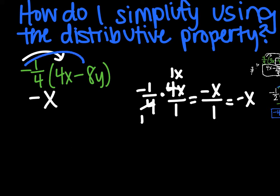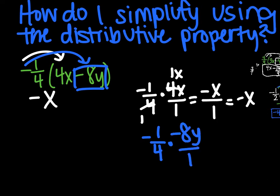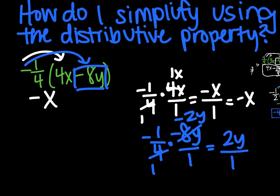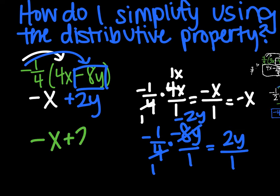Now feed the second bird: negative 1/4 times — don't forget that negative — negative 8y over 1. Simplify — I can divide by 4. I'm left with a 1 and a negative 2y. Negative times a negative is positive 2y over 1, so plus 2y. Check ABC order: x comes first. So my answer is negative x + 2y.